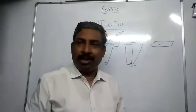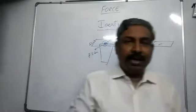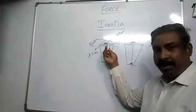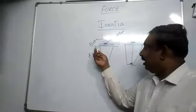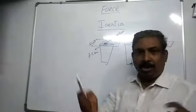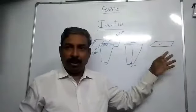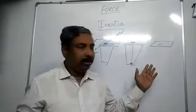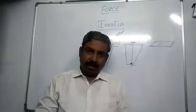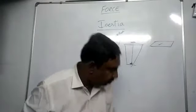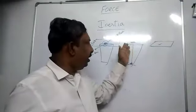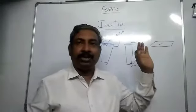Every body at rest will remain at rest. Here we have two bodies: the card and the coin. Force was applied on the card, so the card moved. No force was applied on the coin, so the coin remained in the same state of rest. The coin then fell into the bottle due to gravity. The reason the coin fell into the bottle when you flipped the card is inertia of rest.